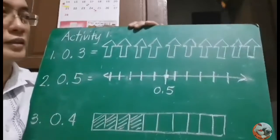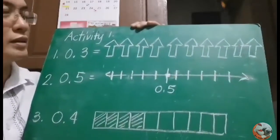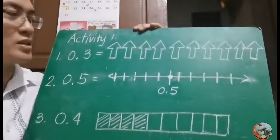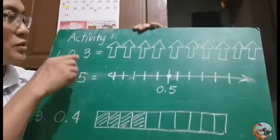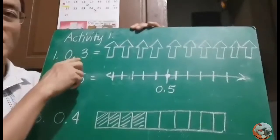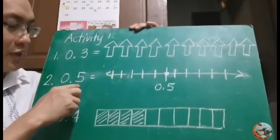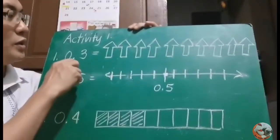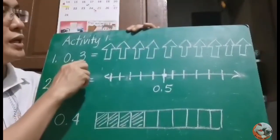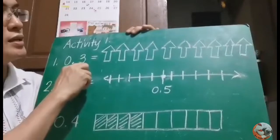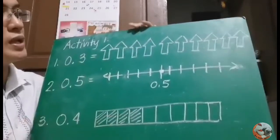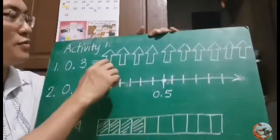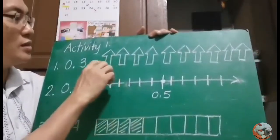Activity 1: How do you visualize decimals? So, 3 tenths, 5 tenths, and 4 tenths. How do you visualize decimals using the tenths?